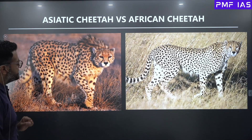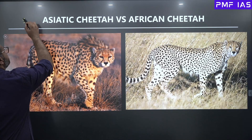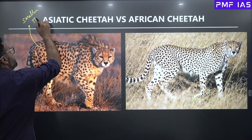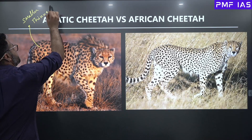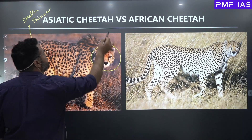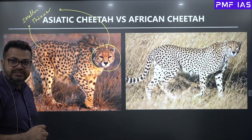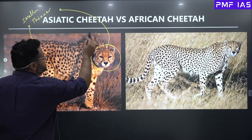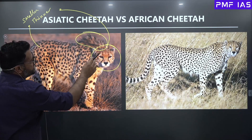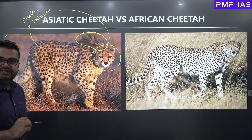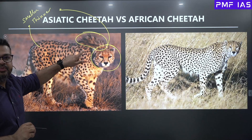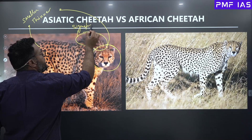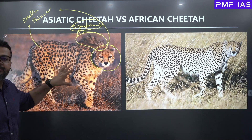Asiatic Cheetahs are comparatively smaller and thinner — they are leaner as well as smaller. The head of the Asiatic Cheetahs is also smaller than the African Cheetahs. When you look at the Asiatic Cheetahs a little more carefully, you will see that there is a mane above the head. The mane happens to be slightly more significant and remains for a much longer period of their life.